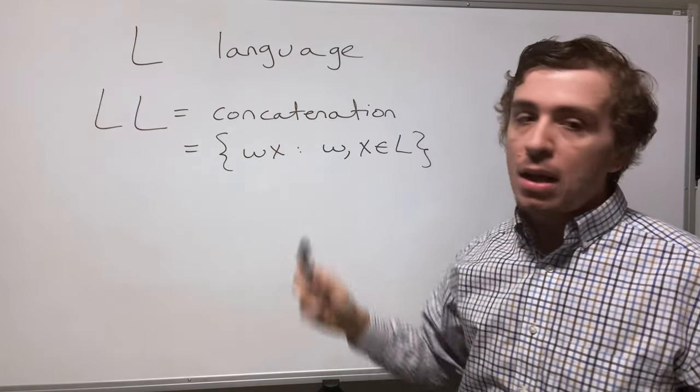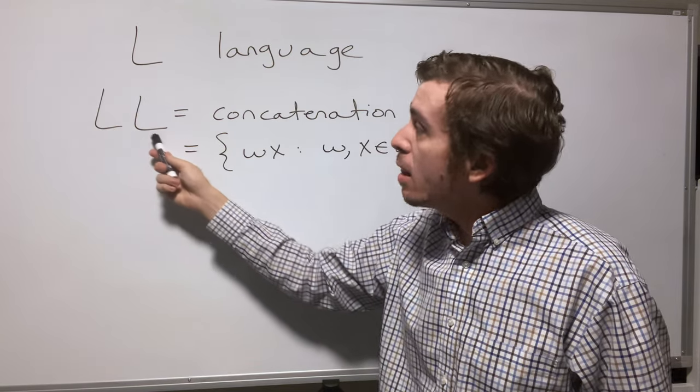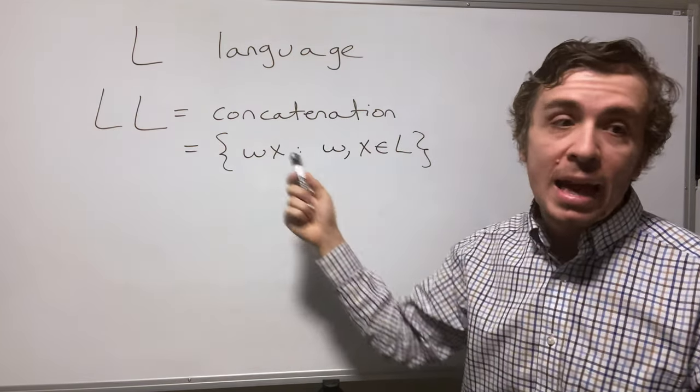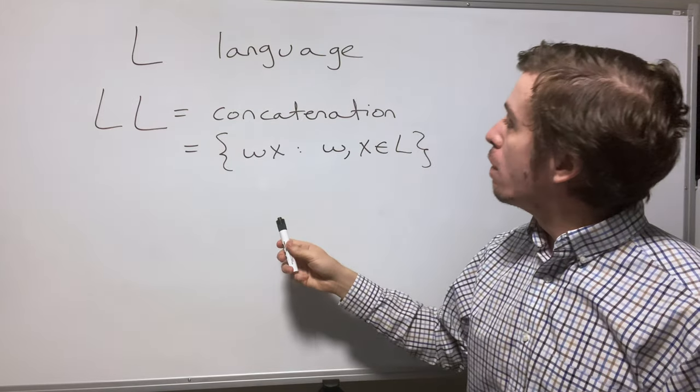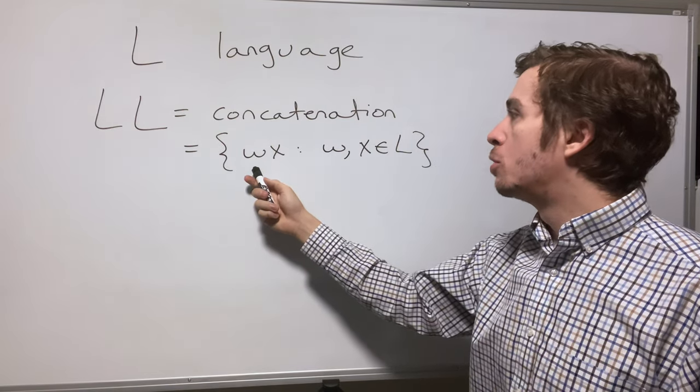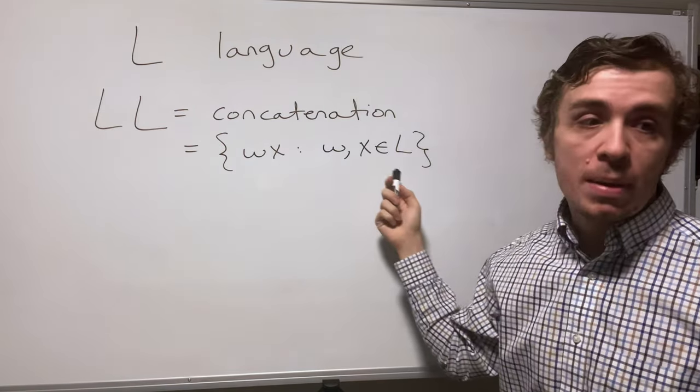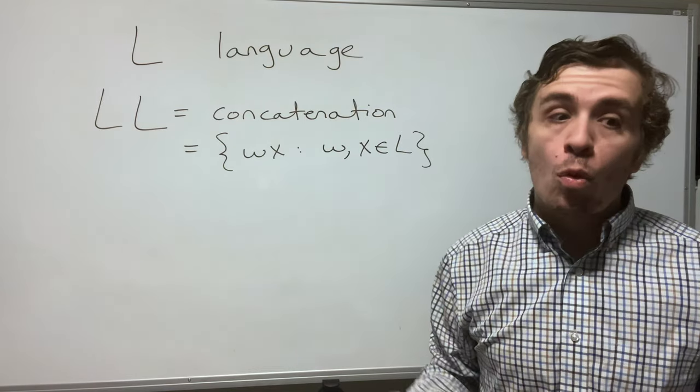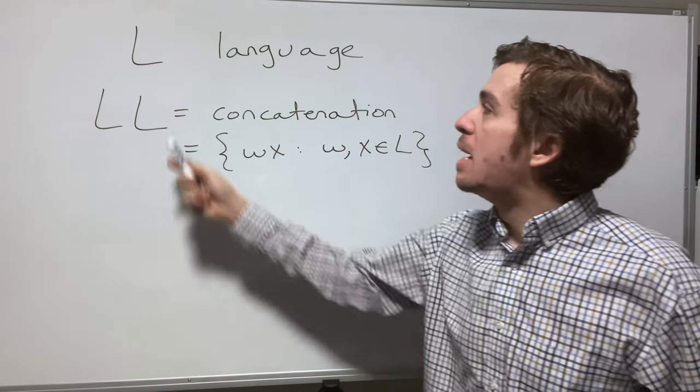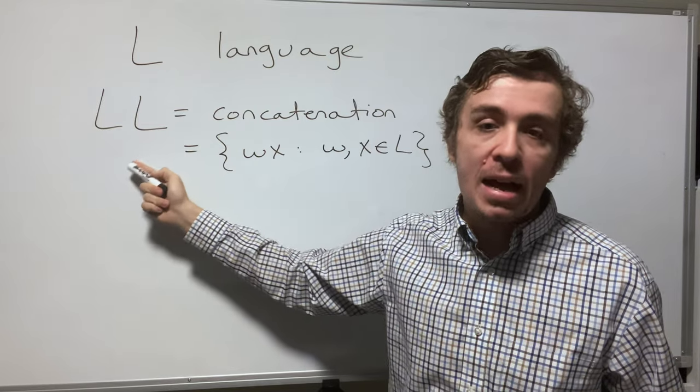Okay, consider a language L that can be any language. Now we're going to consider the language LL, which is just the concatenation of L with itself, and that is the set of all strings WX where W and X are from L. And one thing that we'll prove is that if L is regular then LL is also regular. So we can make an NFA for that language L because we know it's regular and epsilon transition into a second copy of that NFA.